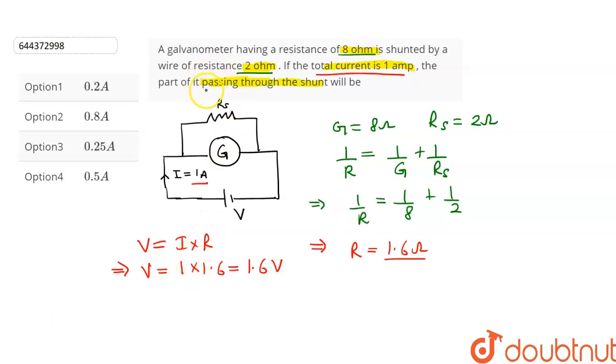We have to calculate the current passing through the shunt and we can see that they are connected in parallel. So, the voltage across them will be same which is equal to 1.6 volts and we know that V is equal to I into R. So, let the current through the shunt be I2. So, we can write V is equal to I2 into the shunt resistance which is RS. So, from here we can write I2 is equal to V is 1.6 divided by RS which is 2 ohms. So, I2 comes out to be 0.8 amperes.